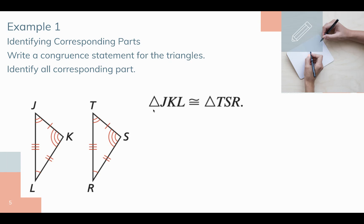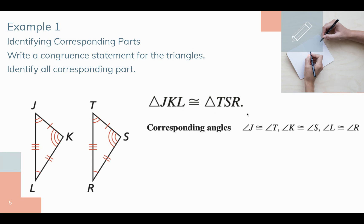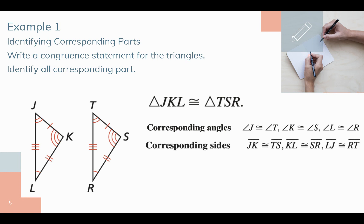So the congruence statement is: triangle JKL is congruent to triangle TSR. This statement alone gives us all six corresponding parts. The vertices in the first, second, and third positions tell us J matches T, K matches S, and L matches R. The sides are also in the statement: side JK matches with side TS, KL matches with SR, and JL matches with TR.